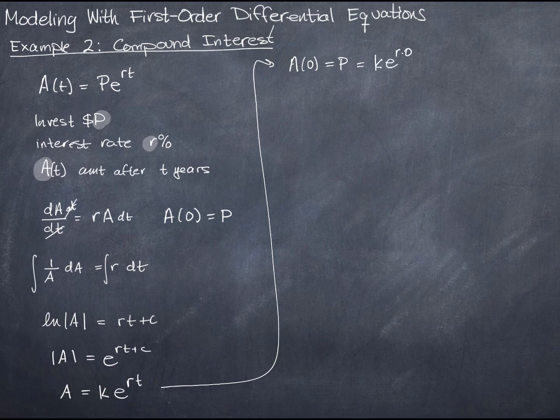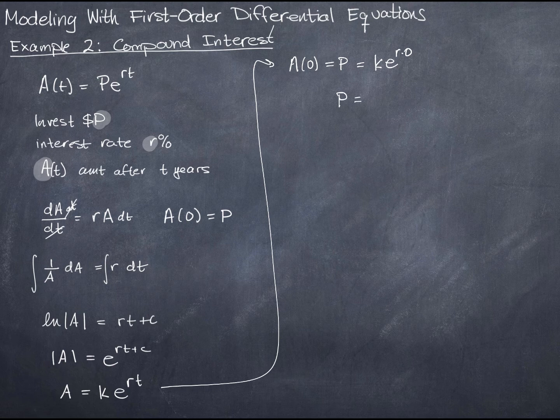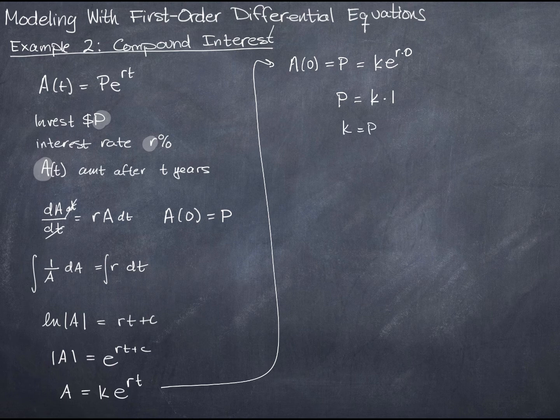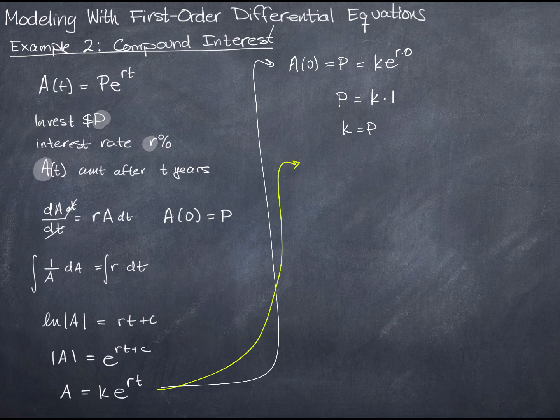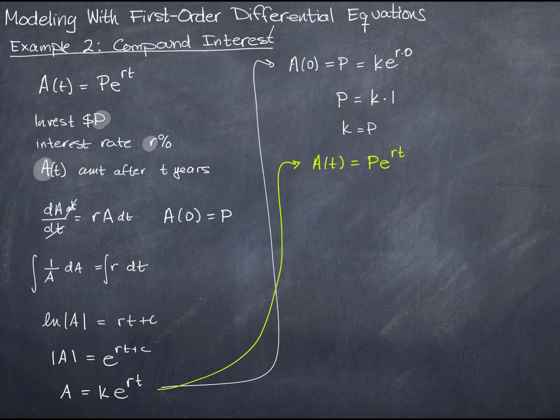t is zero. This is when time is zero, the very beginning of the account. That gives us P equals k times e to the zero, which is one. In other words, k equals P, and I can write my formula, which is here. Now, this way, A of t equals P for k, e to the rt. And there you have it. That's where this formula comes from.